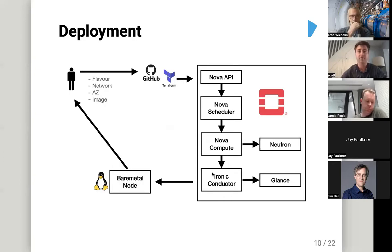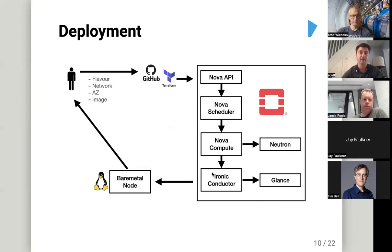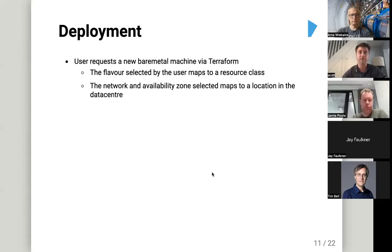This is a representation of what a user sees during deployment. A user — Jamie in this case — makes a pull request into Git specifying flavors, networks, AZs, and images. That flows through Nova into Ironic and fans out to services like Glance and Neutron to move ports. The user requests the bare metal machine via Terraform; the flavor maps to the resource class, and the network and availability zone map to a location in the data center where the server will be placed.